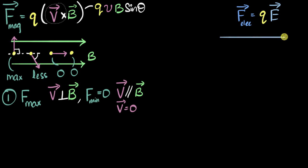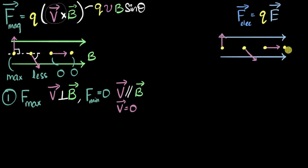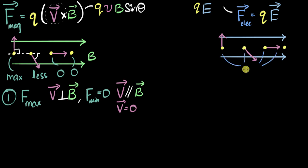Now let's look at the electric force — the good old familiar electric field. Same four protons, the same four conditions: moving this way, this way, this way with some speed, and one not moving at all. The magnitude of the electric force is simply Q times E. There is no velocity in this equation. Therefore, the electric force doesn't care about the velocity or the direction of motion — it puts the same force on all of them.